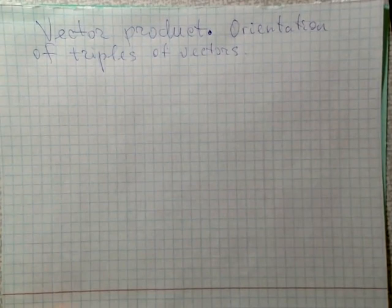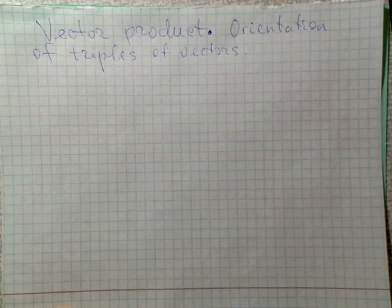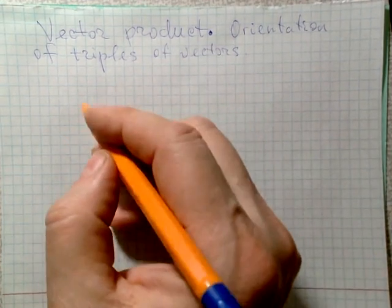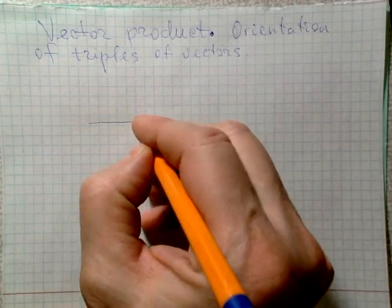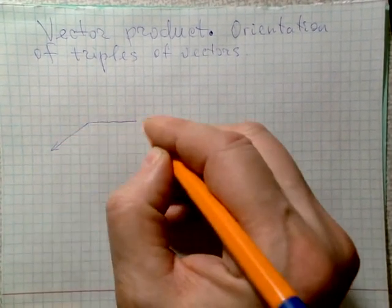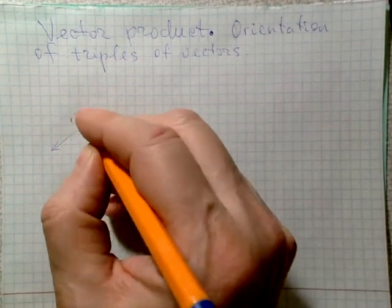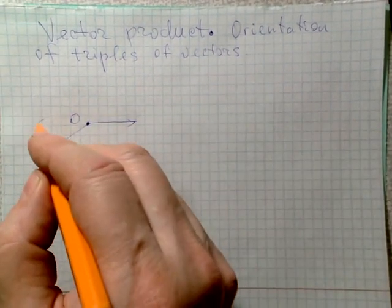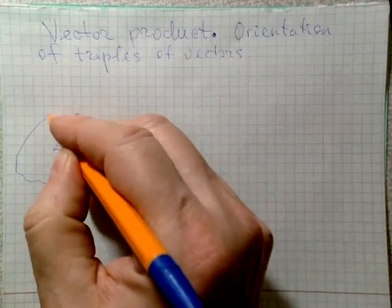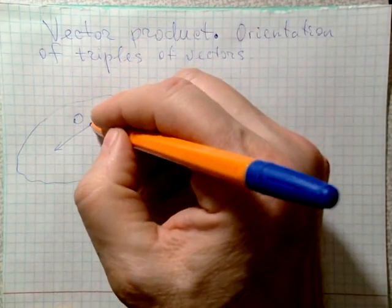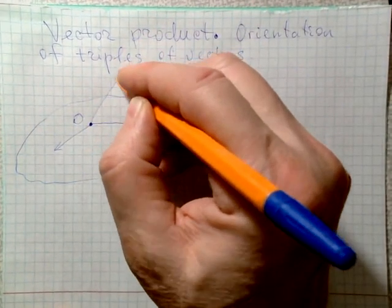Assume that we have three vectors which are not in one plane, so their configuration is spatial, not planar. Let's draw them so that they have a common initial point. Two of them are drawn, and these two vectors can be placed in some plane, while the third vector is not in this plane.